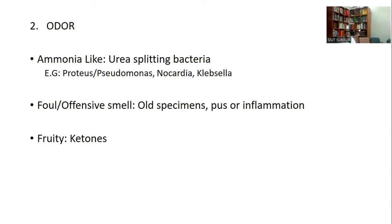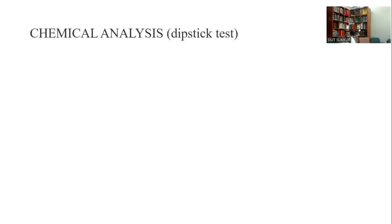The odor of urine can be ammonia-like, indicating urea-splitting bacteria such as Proteus, Pseudomonas, Nocardia, or Klebsiella. Foul or offensive smell indicates an old specimen, pus, or inflammation. A fruity smell indicates ketones in the urine, which is an abnormal chemical finding.